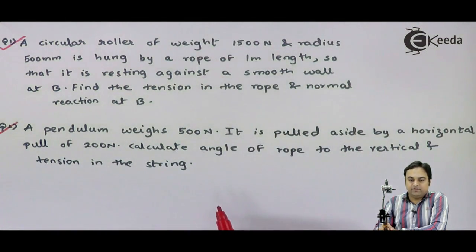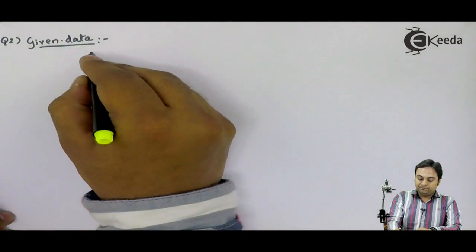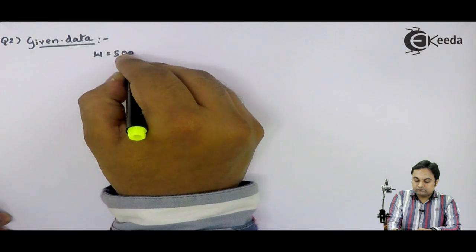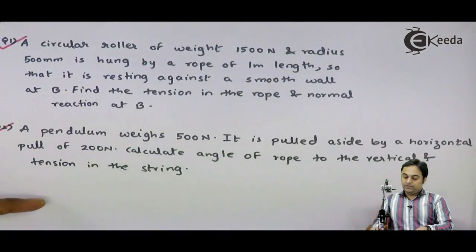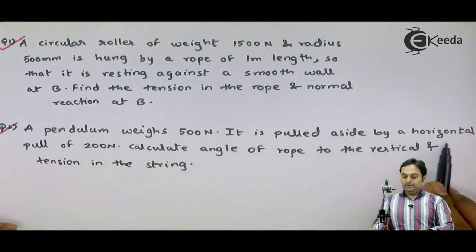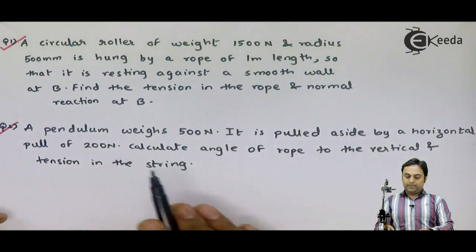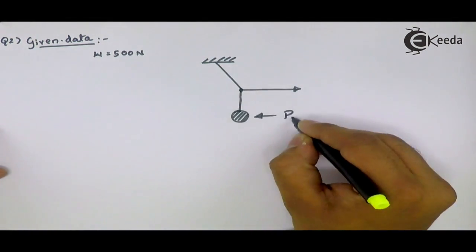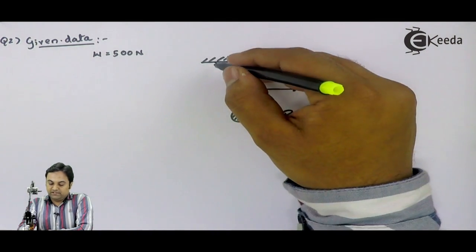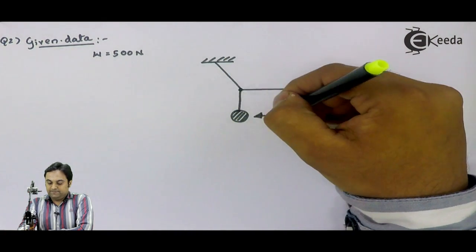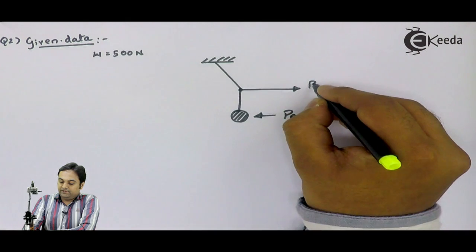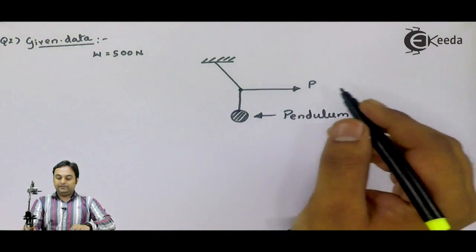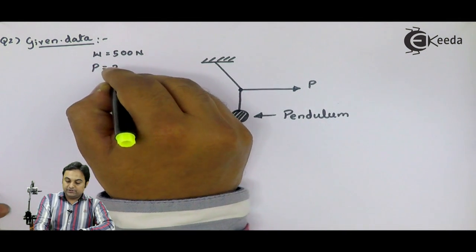In this question the diagram is not given, but with the help of some hints provided we can draw the diagram. A pendulum is attached with the help of a string fixed to the ceiling. This pendulum is pulled by a force P, and the value of P is equal to 200 Newton as provided in the problem.